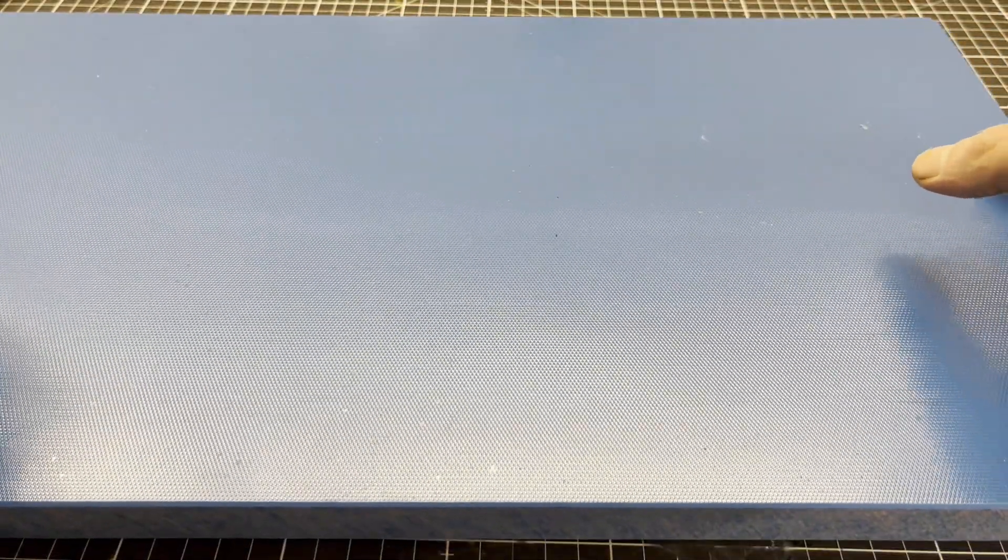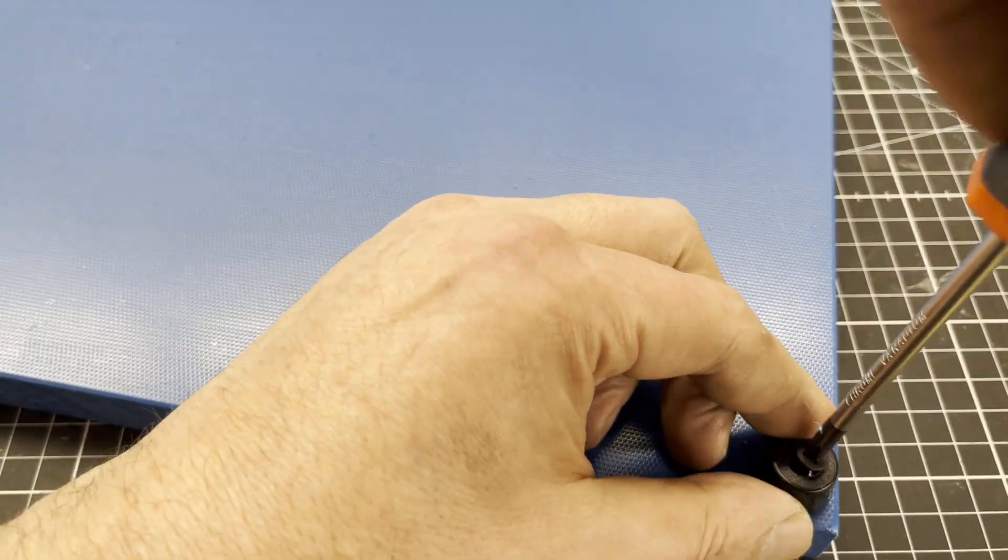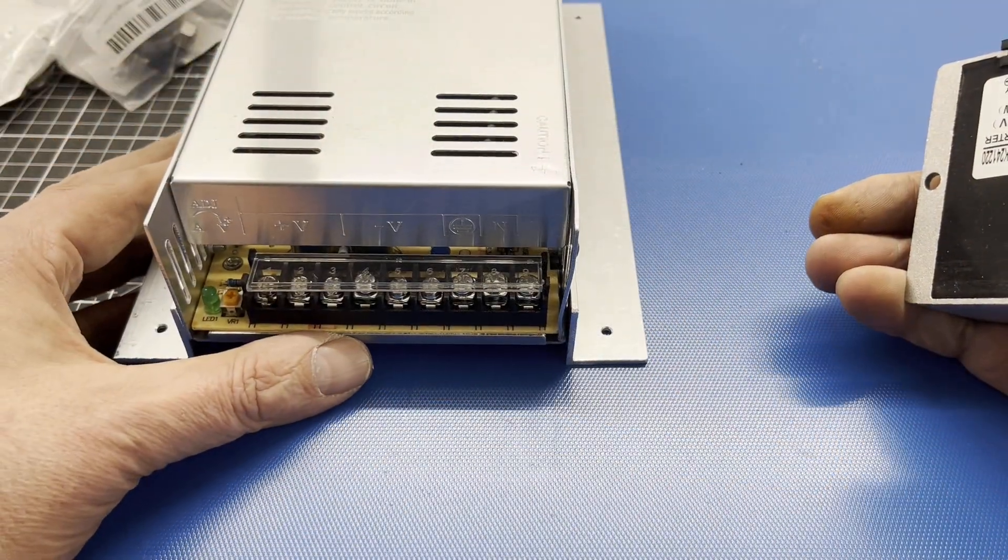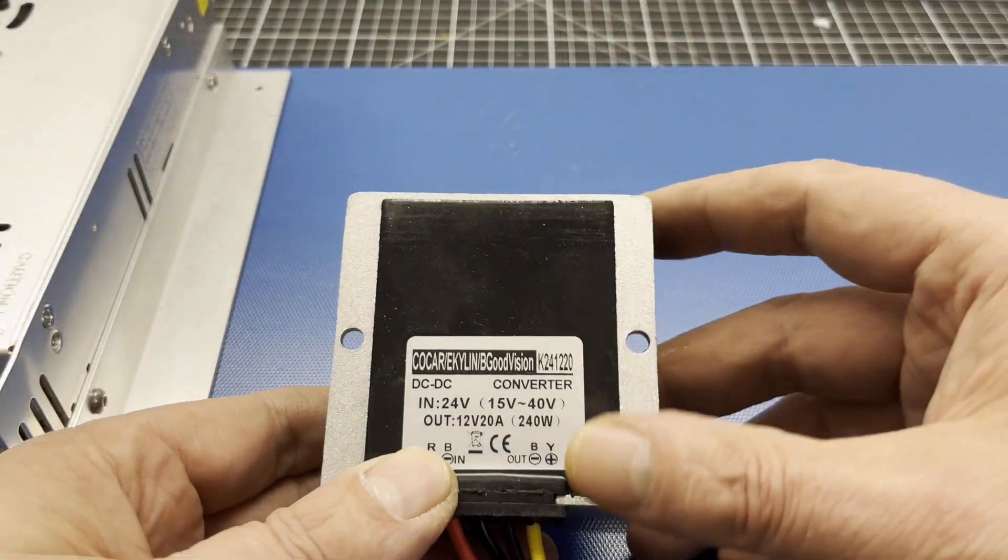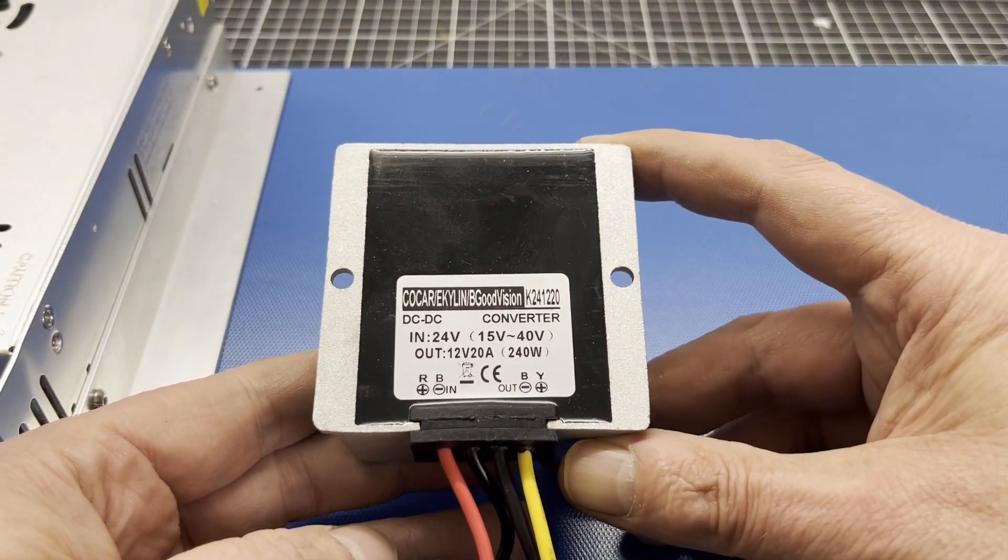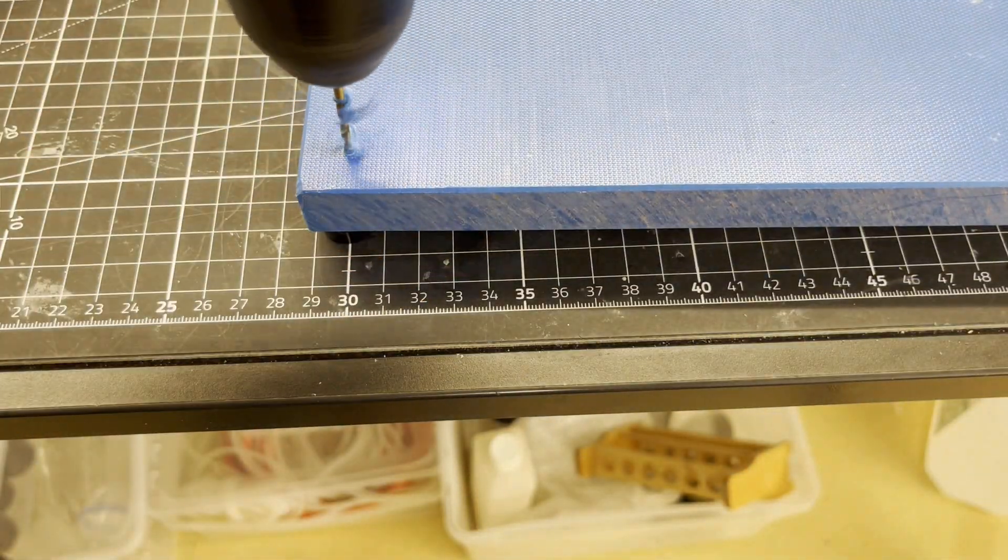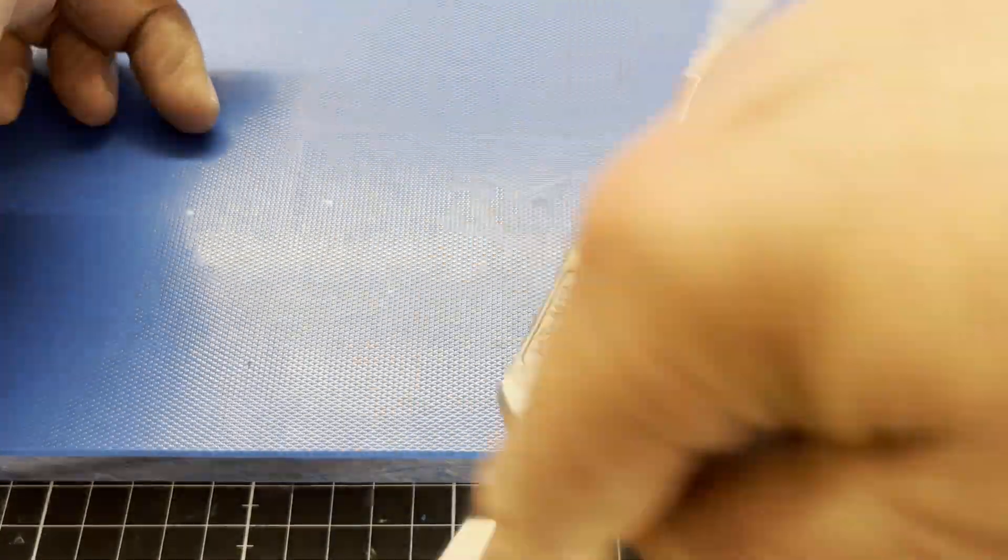A plastic kitchen board measuring 50 x 30 x 2 cm served as a base plate. This DC-DC converter is a bit oversized, but I still had it lying around in my lab. The kitchen board which is made of polypropylene is easy to machine. Thread cutting is also no problem.